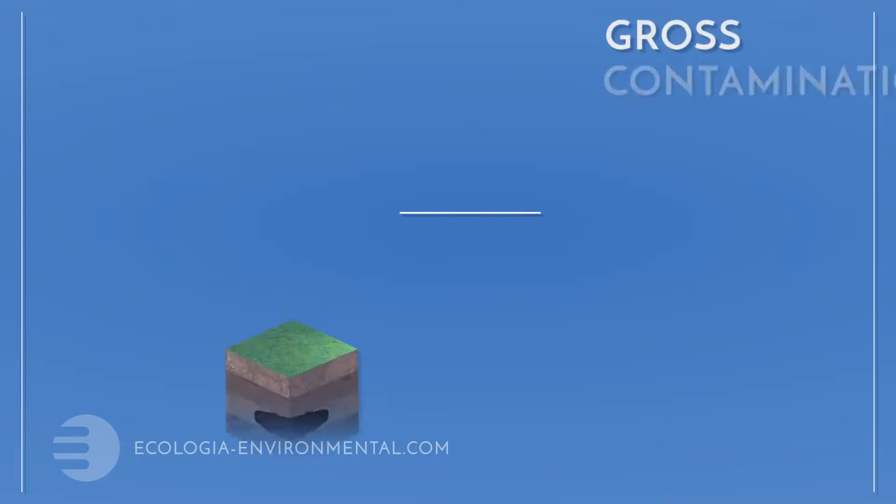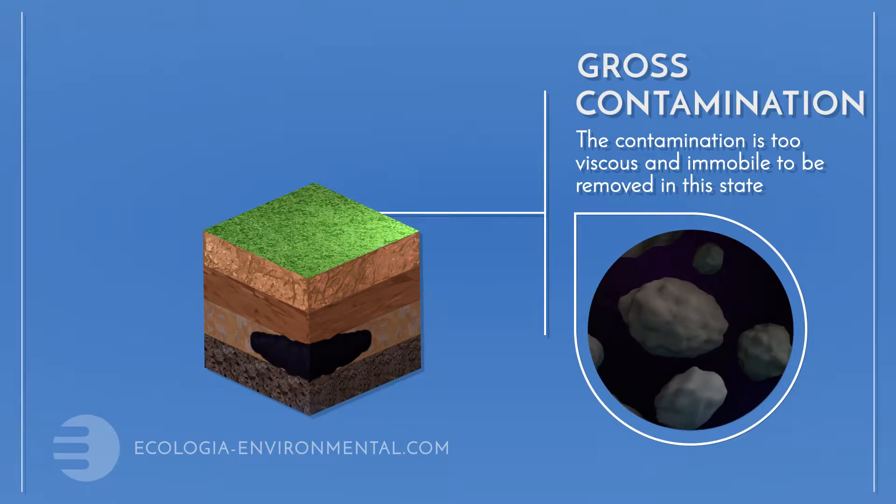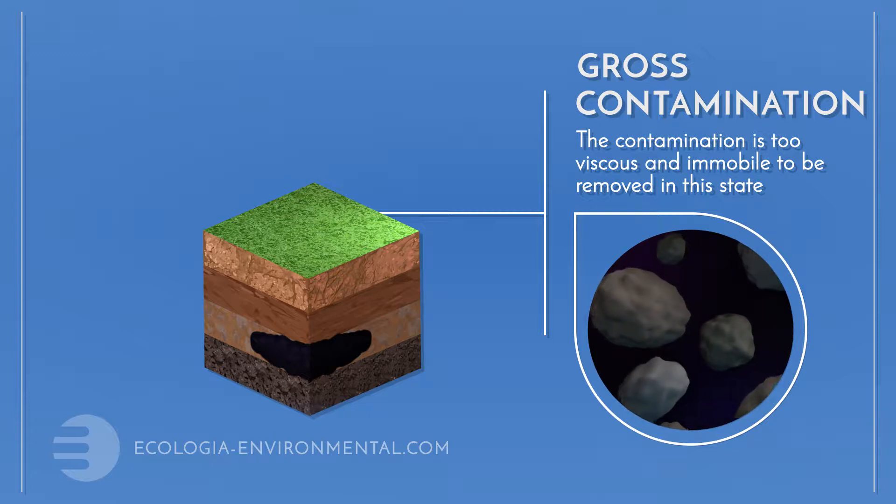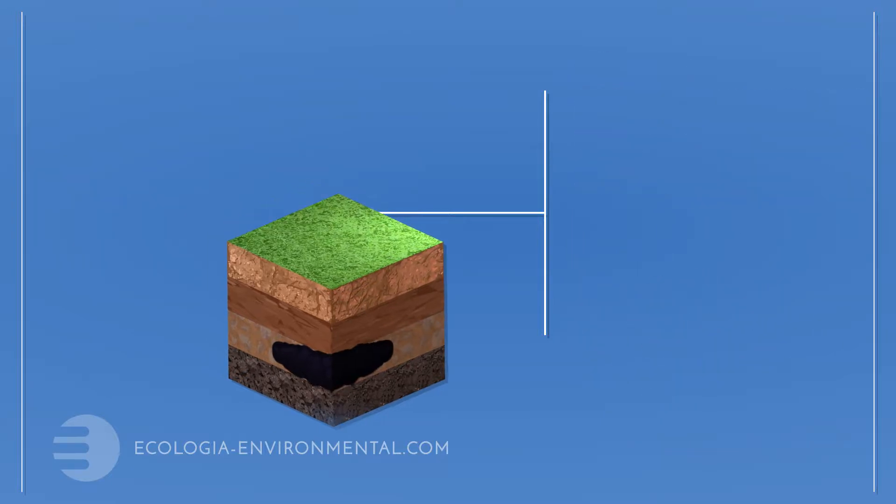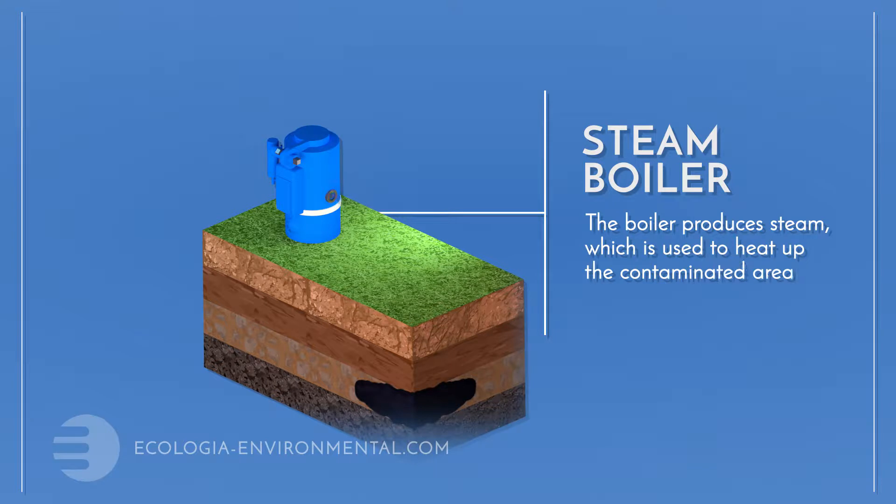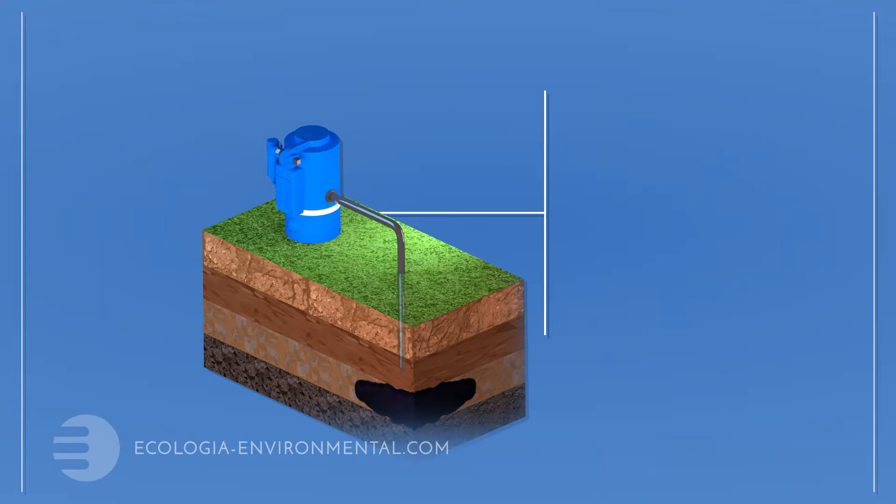Ecologia can use steam injection technology to remove viscous, immobile contaminants such as tar from below ground. A steam boiler is the heart of this technology. This can be powered by electricity, gas, or diesel depending on the scale and location of the project.